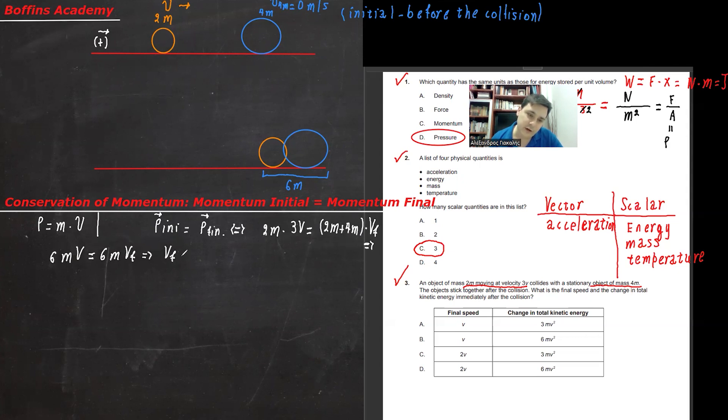Therefore, the final velocity of the objects that are stuck together. As you can assume, we can divide both sides with 6m. Therefore, this means that the m's and the sixes will be cancelled out, will be simplified. V final is equal to v, the initial velocity of the orange object. So basically, right now we have proven that it's going to be either A or B.